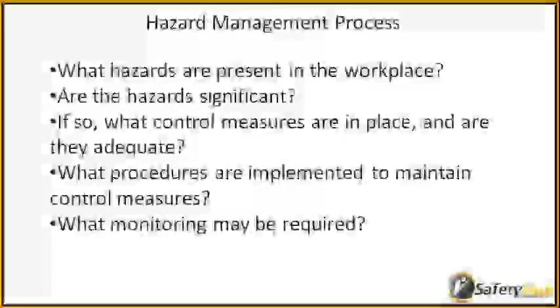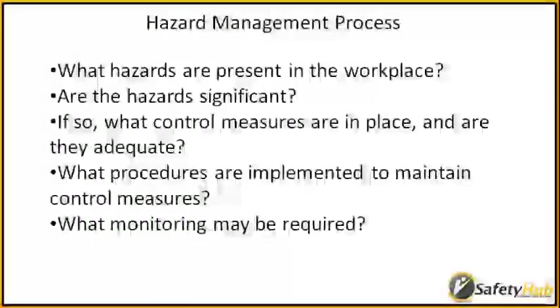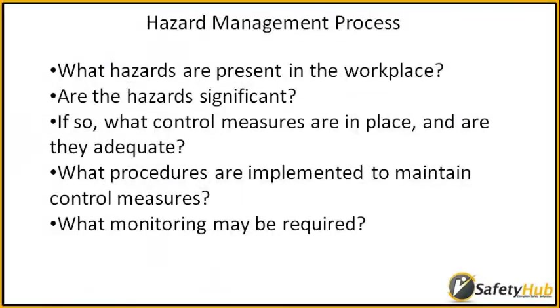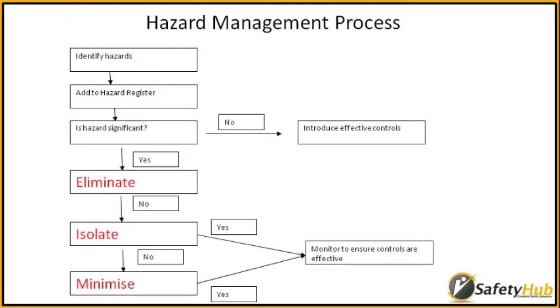Hazard Controls. We now need to look at the significant hazards and put in place control measures. We need to be able to answer the following questions: Are the control measures that we may already have in place adequate? And how are we going to maintain those control measures? By law we have to consider the following three methods and apply them in this order.